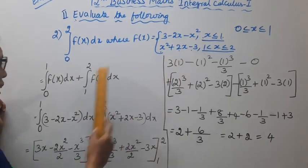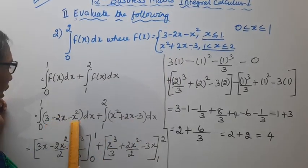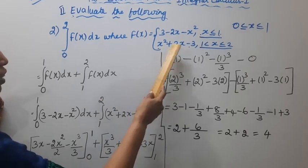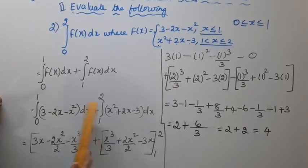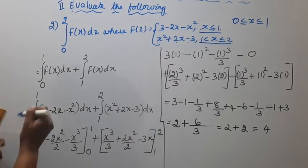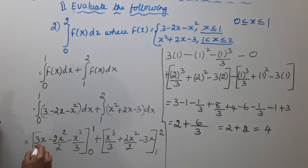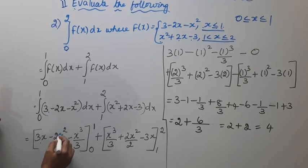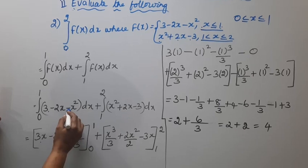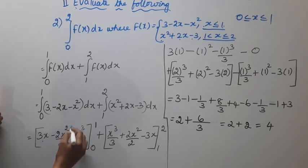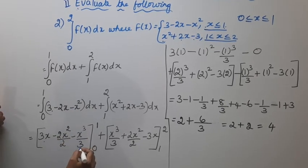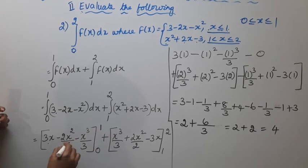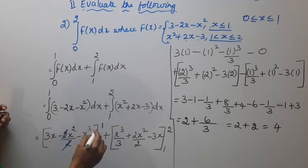Now integrate (3 minus 2x minus x²) from 0 to 1. Integrating: 3 becomes 3x, minus 2x becomes minus 2x²/2, and minus x² becomes minus x³/3, evaluated from 0 to 1. The 2s cancel.